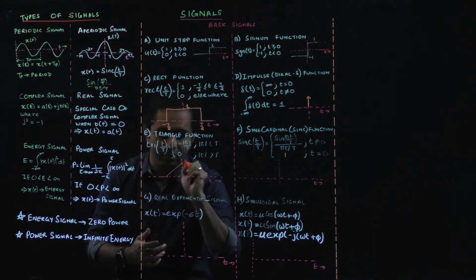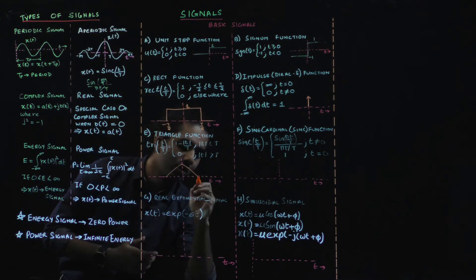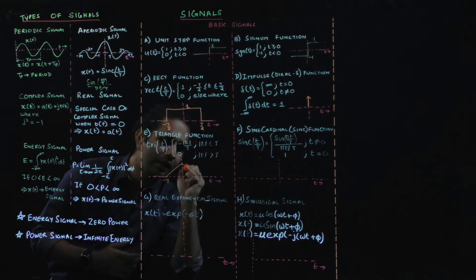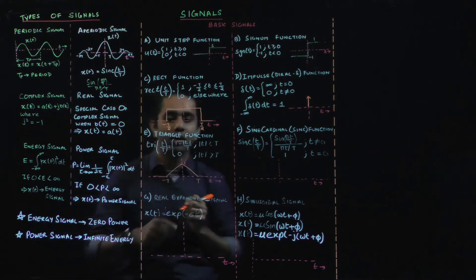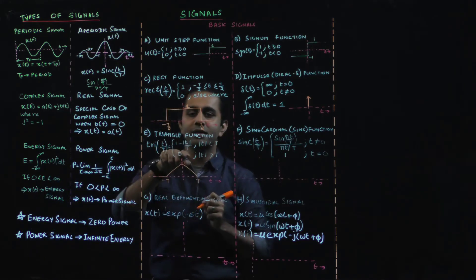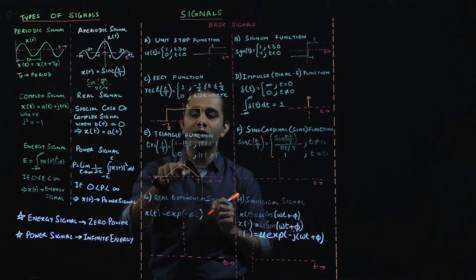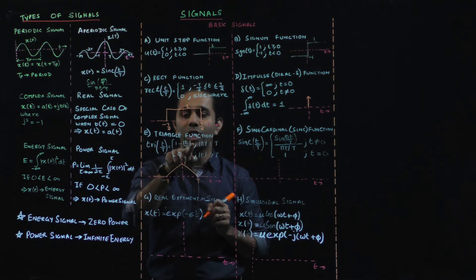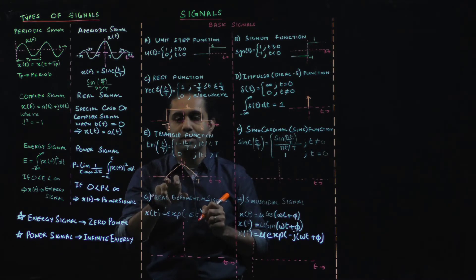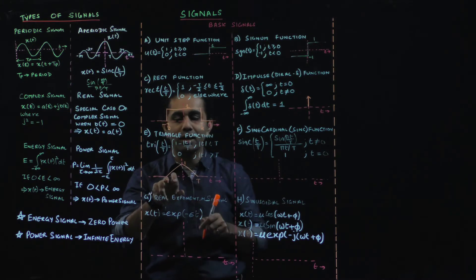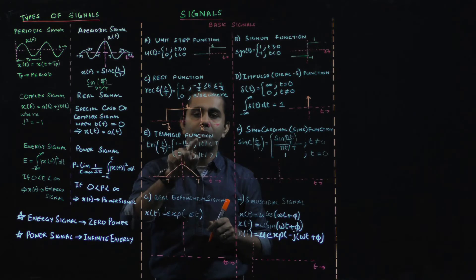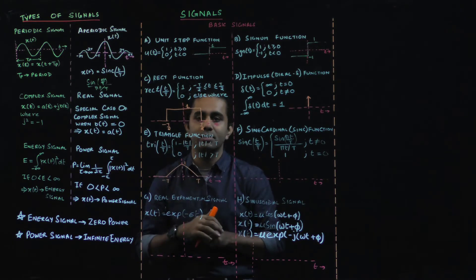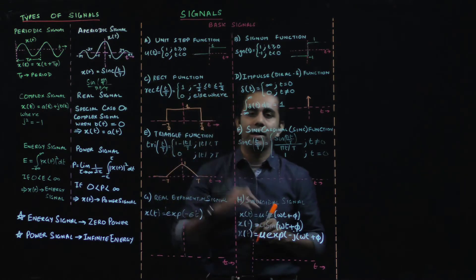The triangle function looks like a triangle from minus T to T with magnitude 1. Checking the definition: at t = 0, we get a value of 1; at t = T, the value is 0; at t = minus T, the value is also 0. So this triangle function is valid.